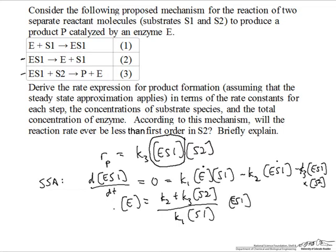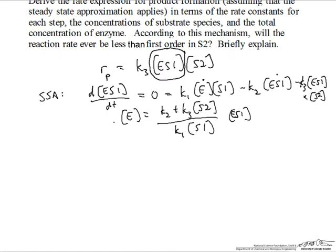We have now one equation and two unknowns relating free enzyme to enzyme-substrate complex in terms of some constants and some concentrations of substrate that are more easily measurable, and so we need another equation, and this is where the total enzyme that we have comes in.